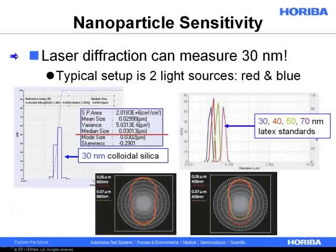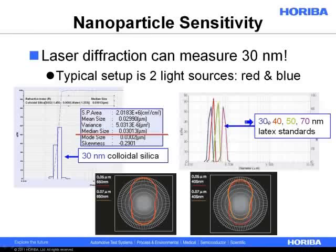Diffraction has been proven to have very good sensitivity to nanoparticles. The Horiba LA-950 is still the only analyzer that can measure down to 30 nanometers, using a red and blue light source setup. We measured colloidal silica — Ludox TM — and it came in at a median size of around 30 nanometers, which is fairly close to what is on the bottle. We can also measure polystyrene latex size standards at 40, 50, and 70 nanometers, and it can distinguish between them. It has decent resolution underneath 100 nanometers, though not as good as the resolution above a few hundred nanometers.